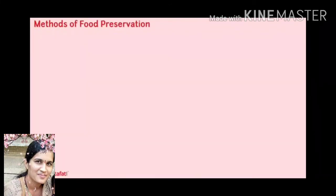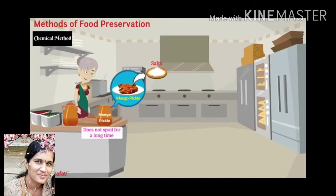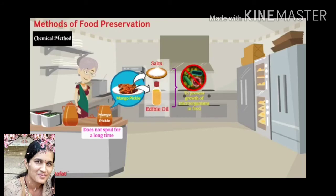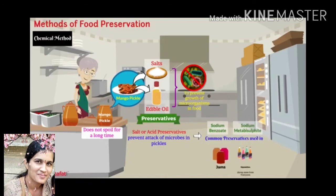Methods of food preservation. Chemical methods: you might have seen your grandmother making pickles that do not spoil for a long time. Mango pickle does not spoil because salt and edible oil are added, which prevent the growth of microorganisms in food. Preservation by salts and edible oil prevents the growth of microorganisms. Salt or acid preservatives prevent the attack of microbes in pickles. Chemicals like sodium benzoate and sodium metabisulfite are used to preserve jams and squashes.